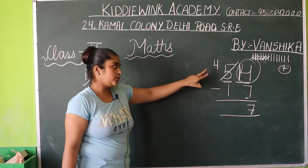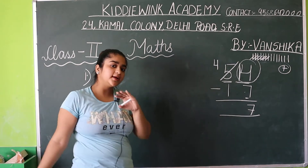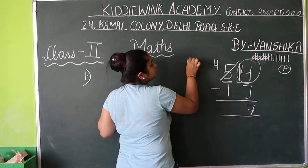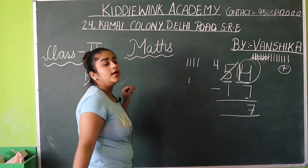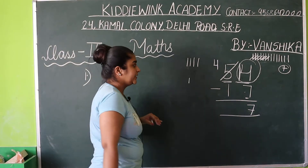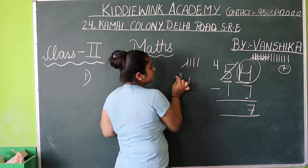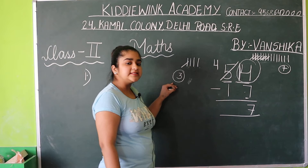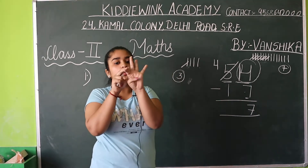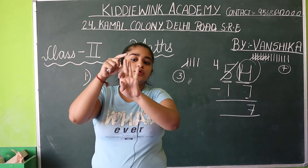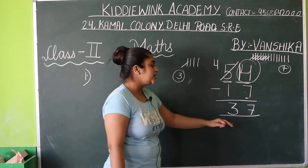Ab yahan pe left digit kya aati bachy? 4. Humne 5 se 1 borrow kar liya. Toh yahan pe hamare left kitna hua? 4. Ab 4 mein se 1 ko minus karna. We'll draw 4 lines — 1, 2, 3 and 4. Aur niche kya digit hai bachy? 1. Humne 4 mein se 1 ko minus karna hai. 4 mein se 1 ko cut kar do. Kya bacha yahan pe? 1, 2, 3. Answer kya aaya? 3. Toh answer is 3. To answer kya aaya aapka? 37.